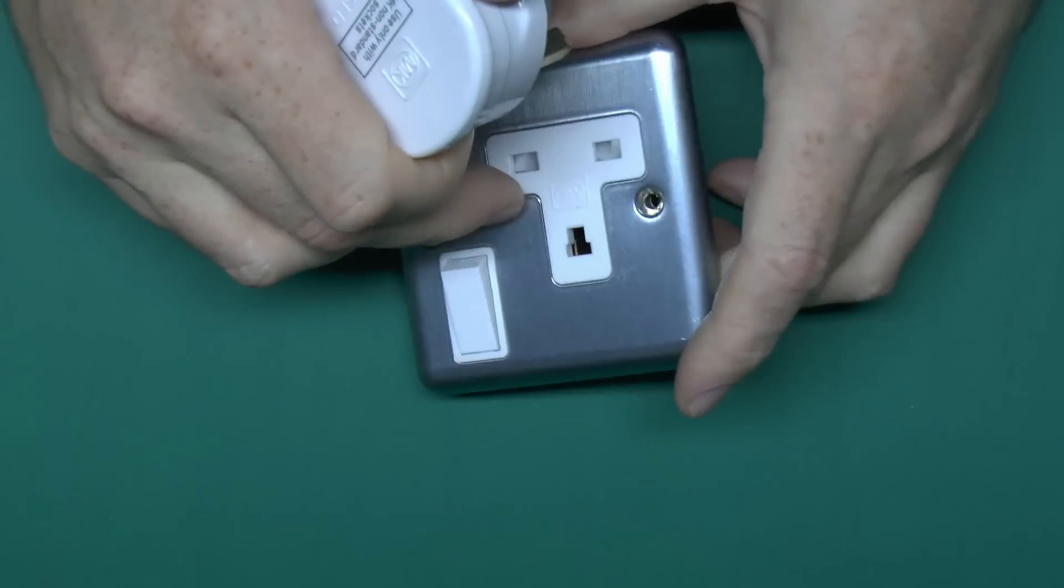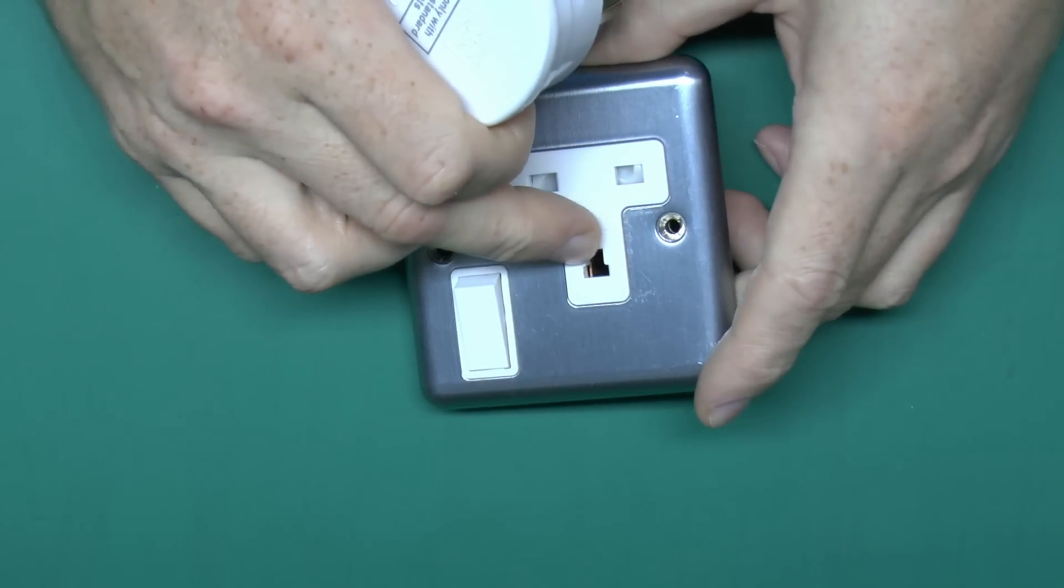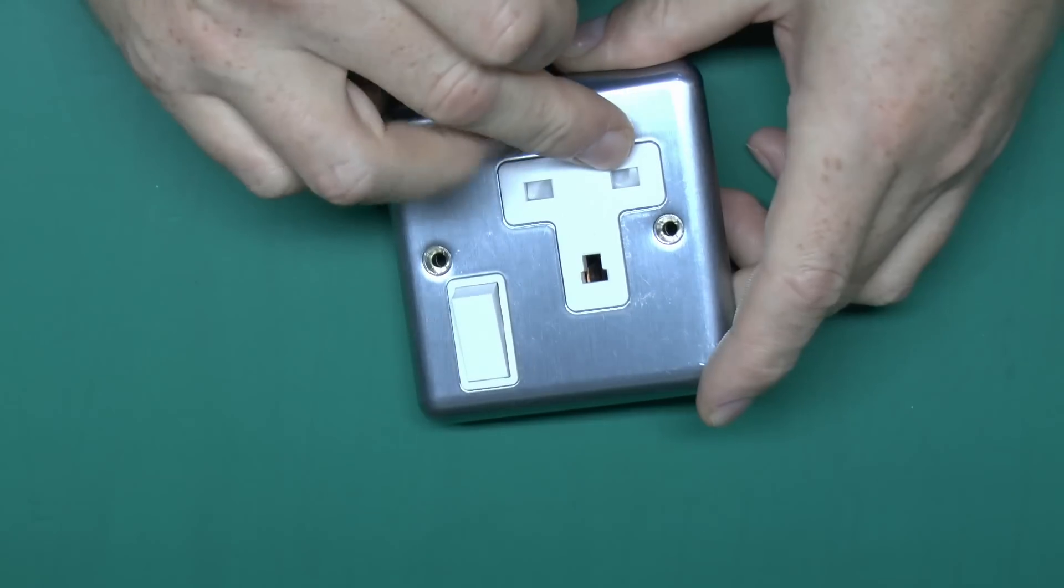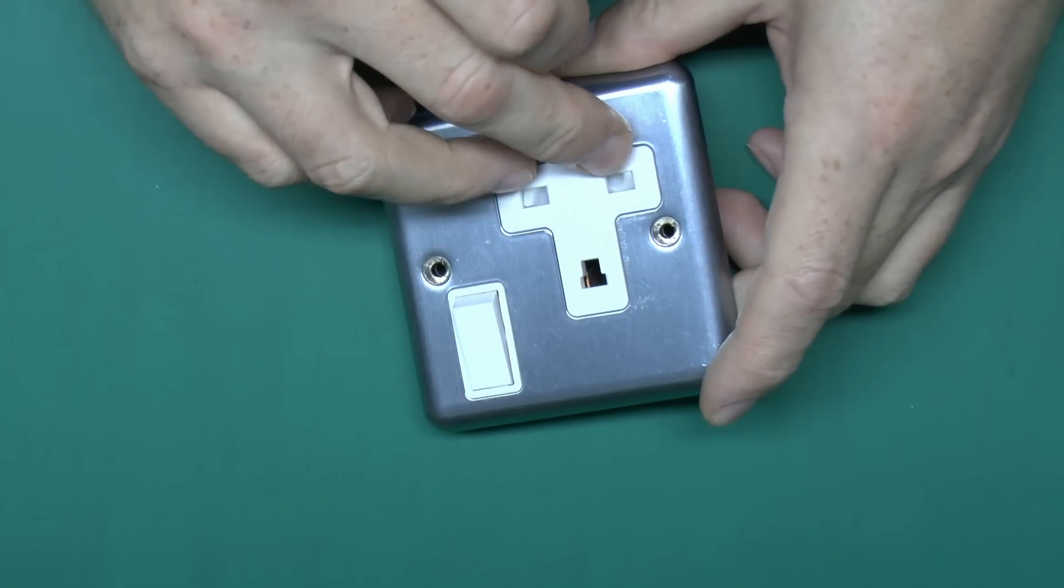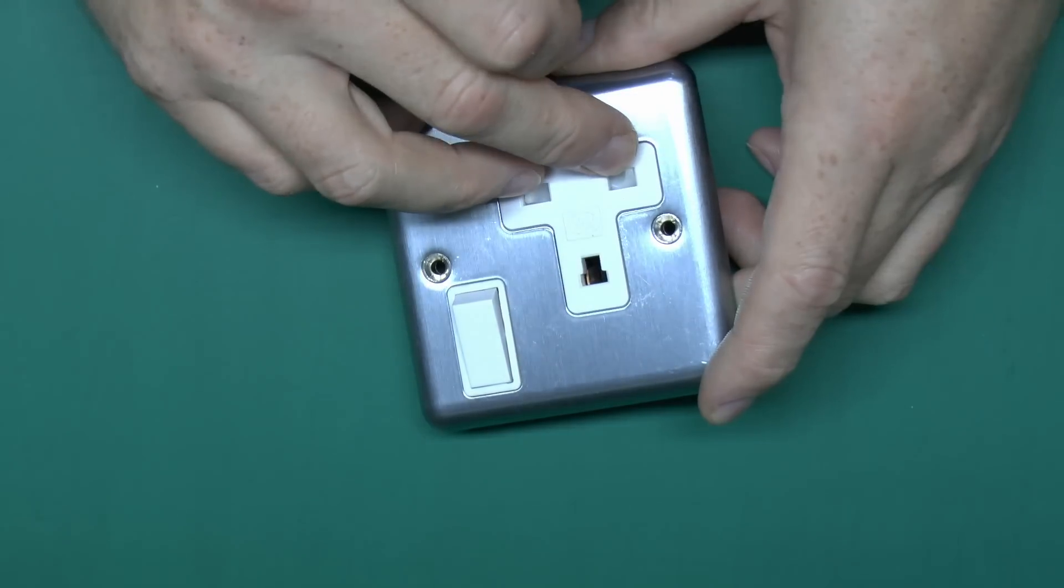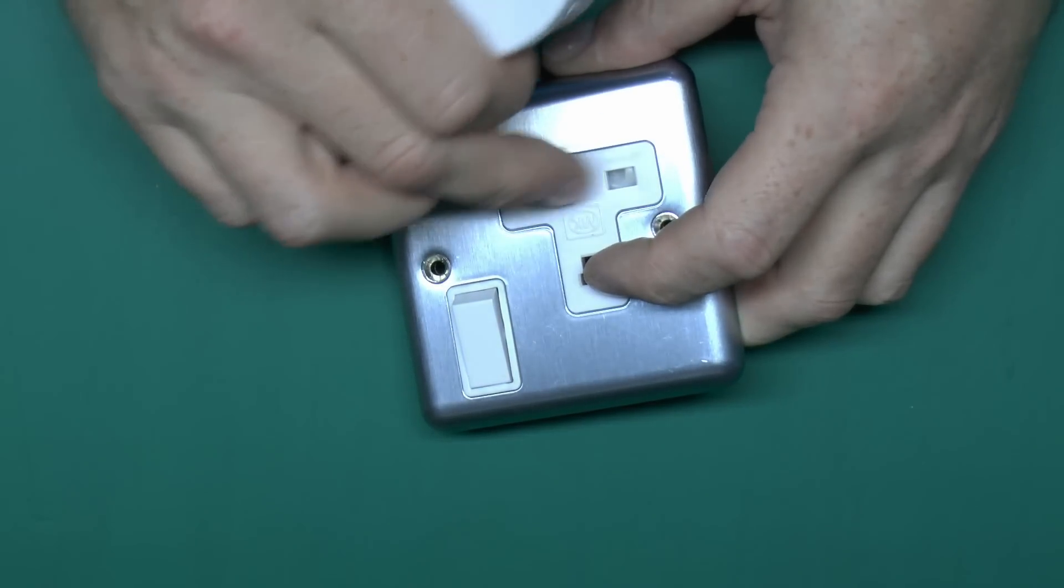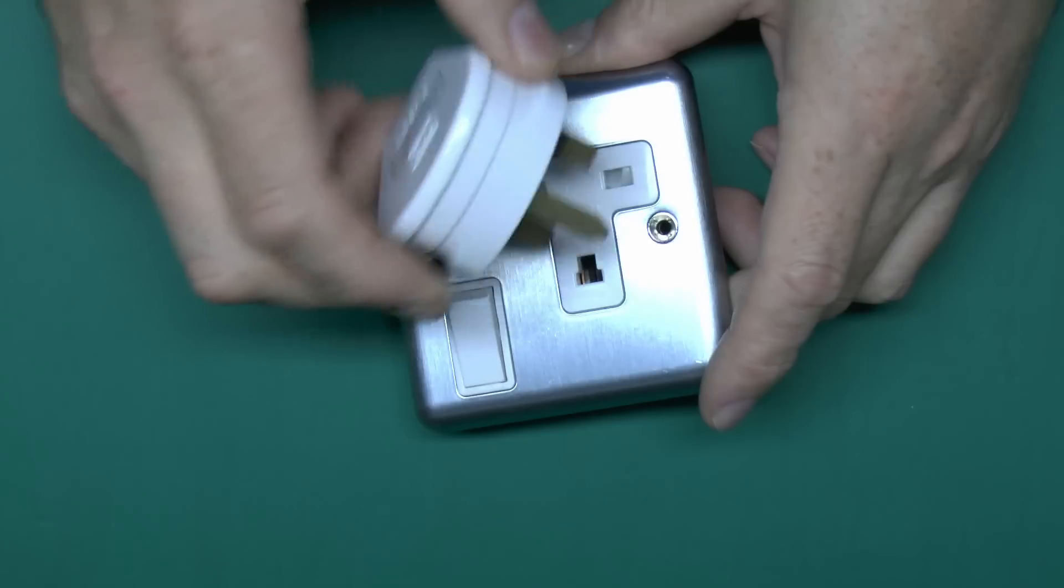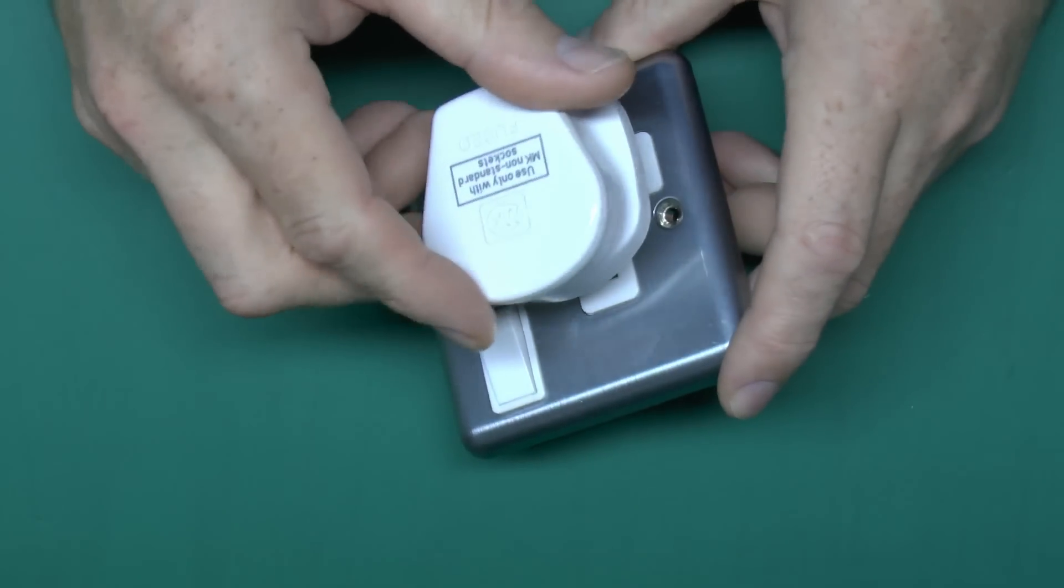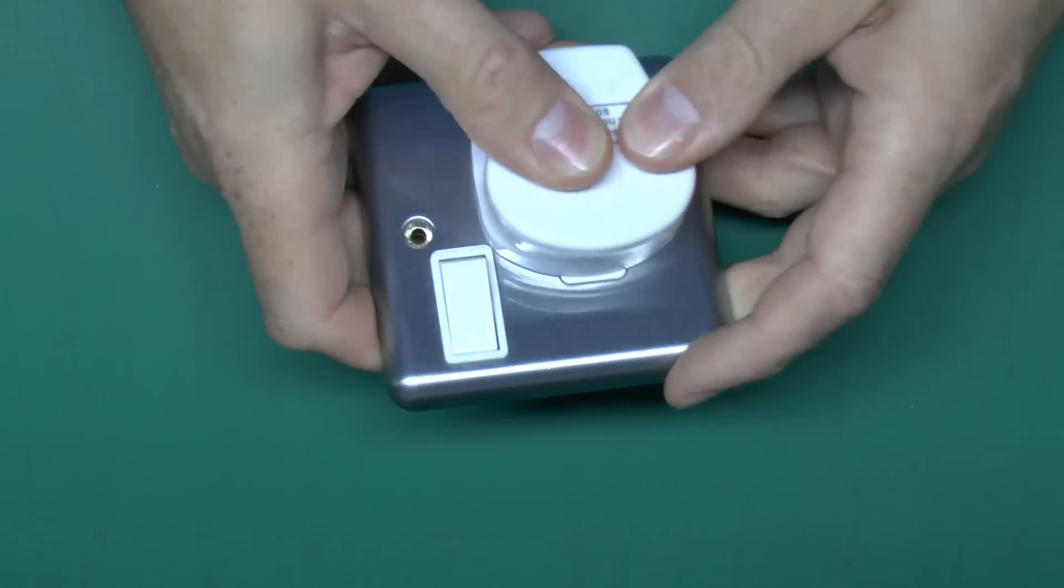This one also has the alternative shutter mechanism whereby you need to insert the earth pin here first, but additionally at the same time you have to actually push the two pins in here simultaneously. If you just poke something there, you can't actually open those just by doing that. It's a sort of a three-way opening mechanism which may or may not be slightly safer.